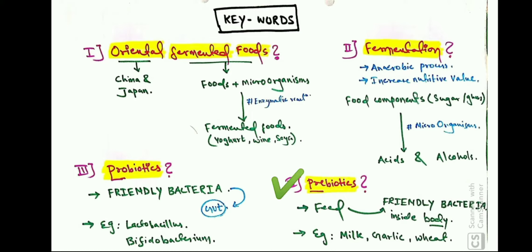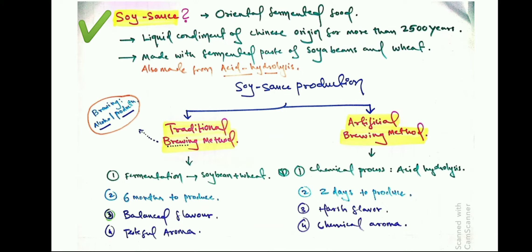The next keyword is 'prebiotics.' Prebiotics are basically feed for the friendly bacteria inside our body — feed for our normal flora. Examples are milk, garlic, and wheat. The last keyword is 'soy sauce.' Soy sauce is an oriental fermented food and a liquid condiment of Chinese origin. A condiment is essentially a flavoring agent used in cooking. Soy sauce is more than 2,500 years old.